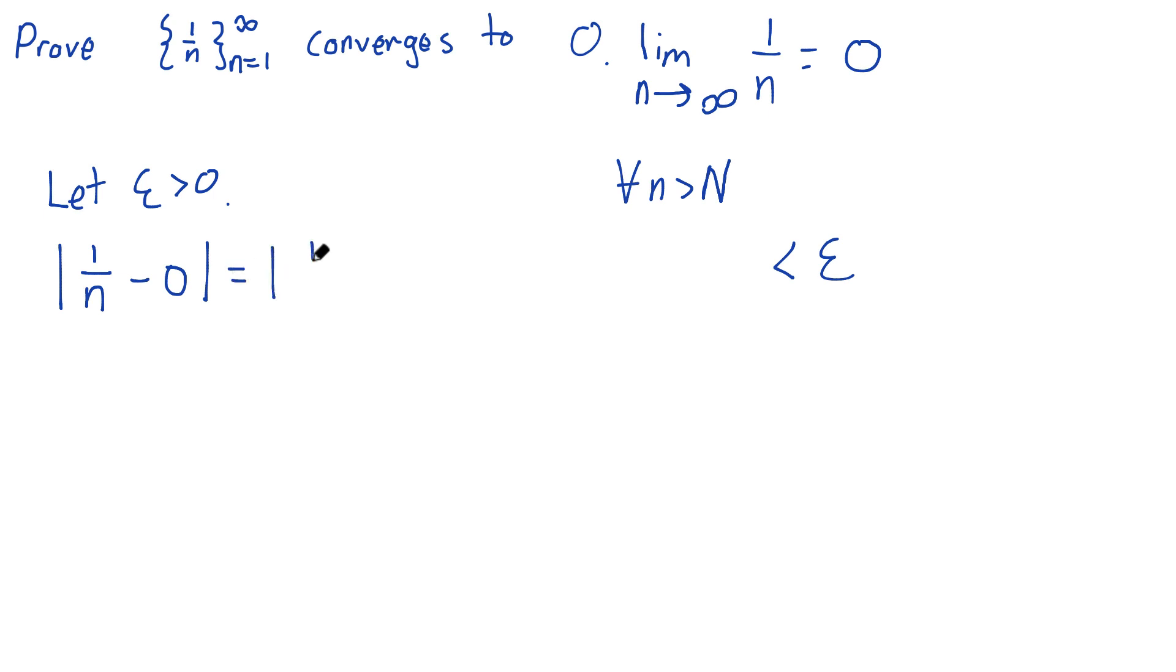Subtracting 0, that's not going to do anything. Well, look at this. N starts at 1 and goes to infinity. These are all going to be positive values. The absolute value of something positive is just itself. I don't really need this, do I? And so when I have something like this where I just have the 1 over n and the epsilon, I go off to the side